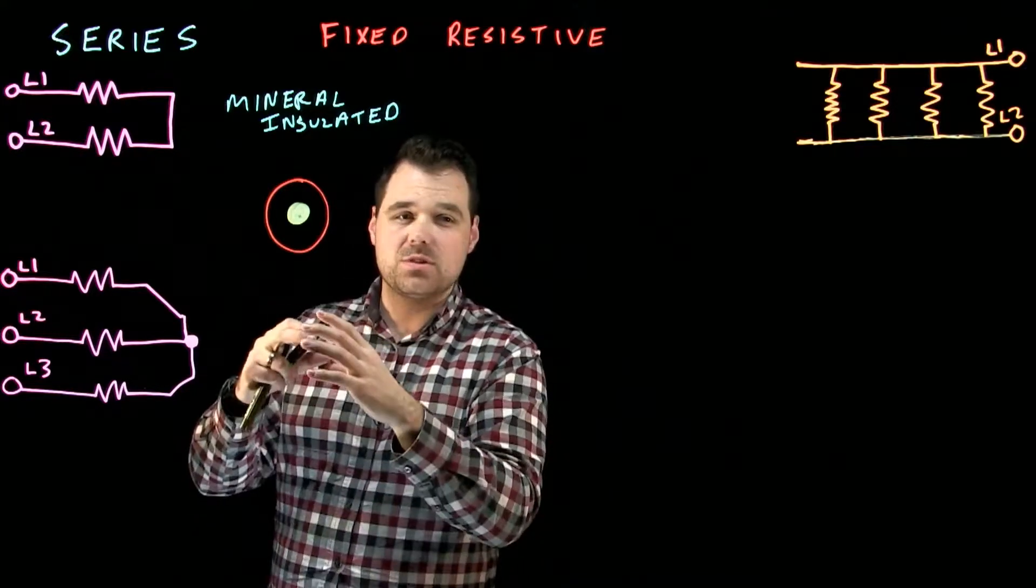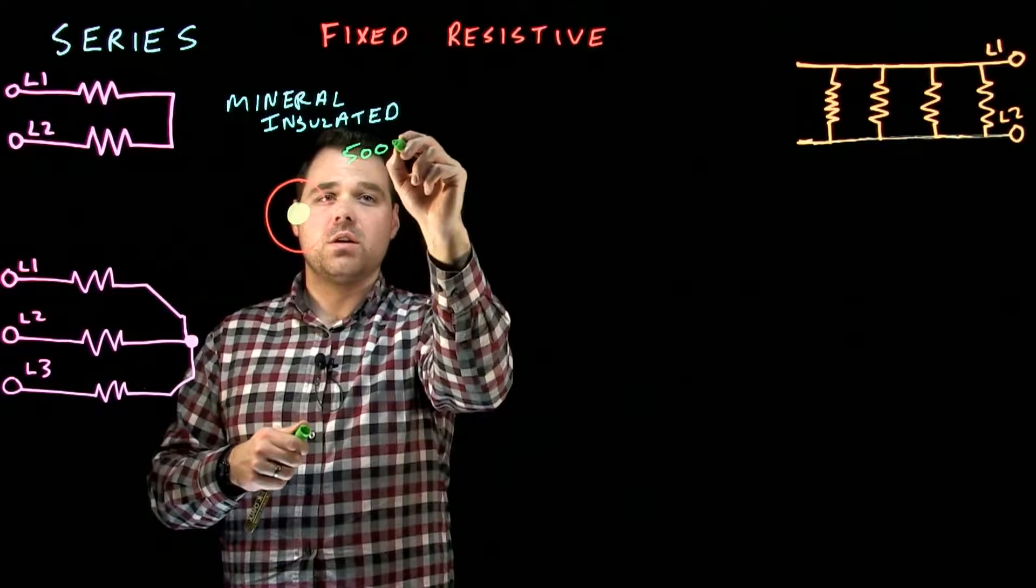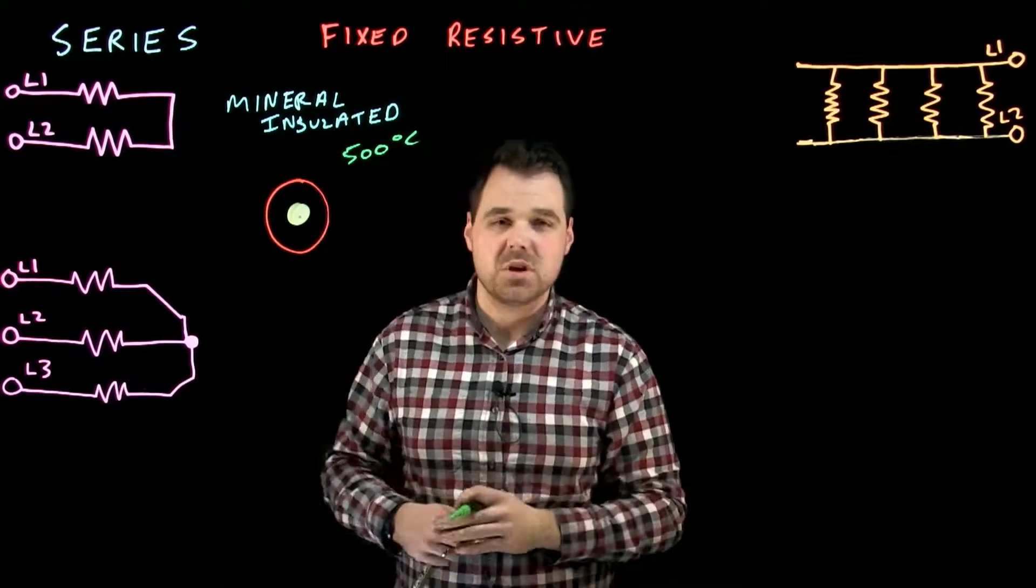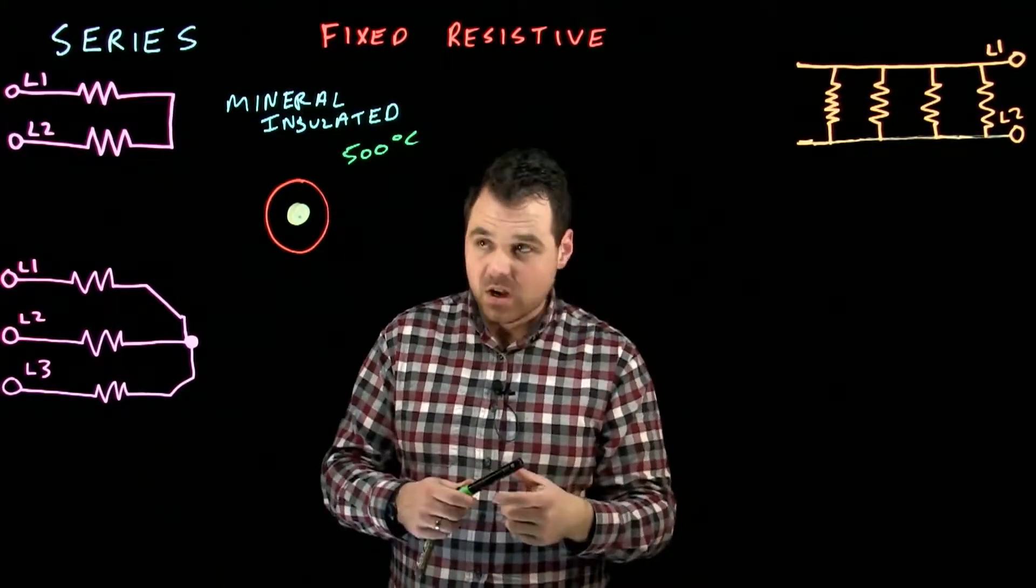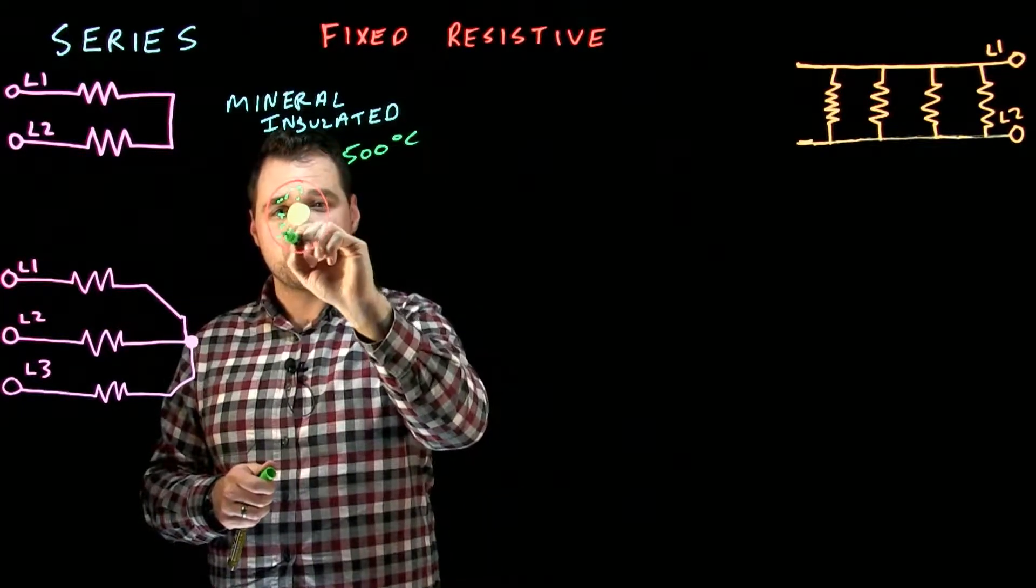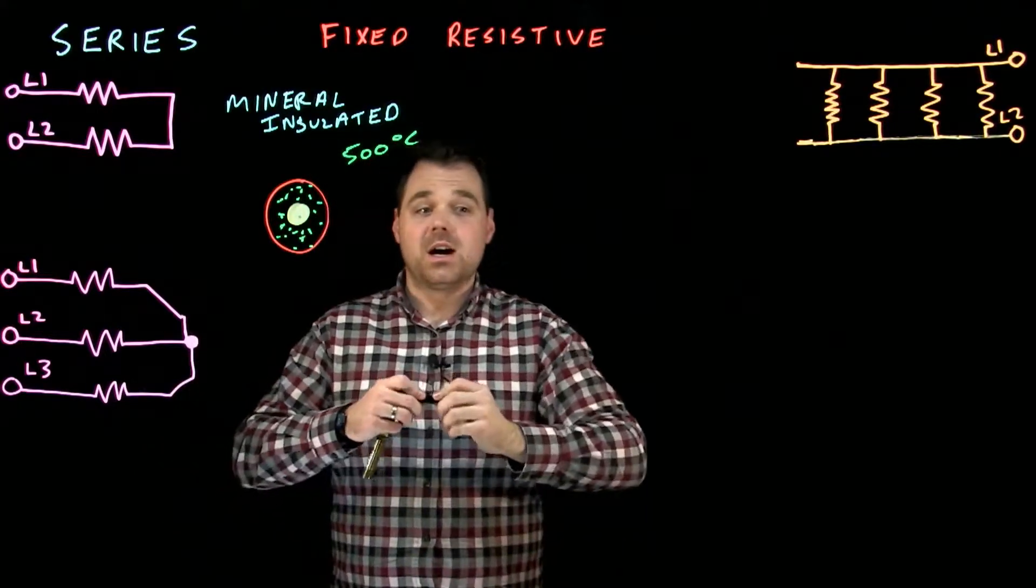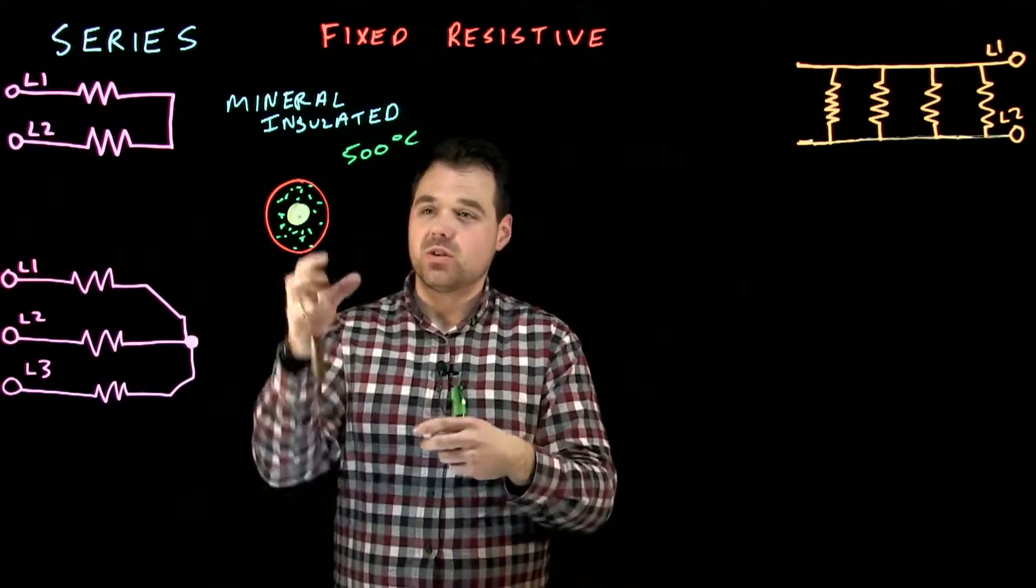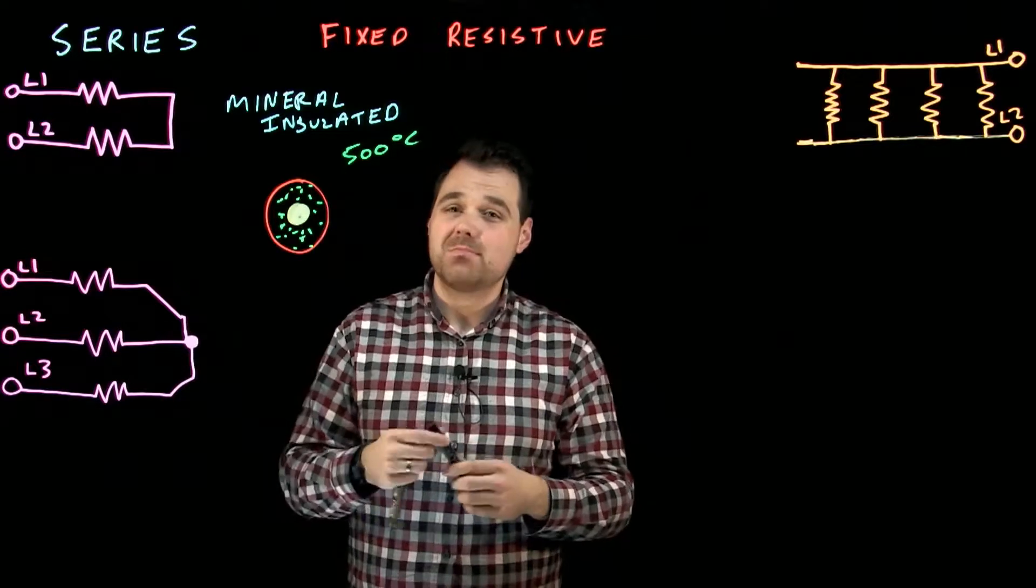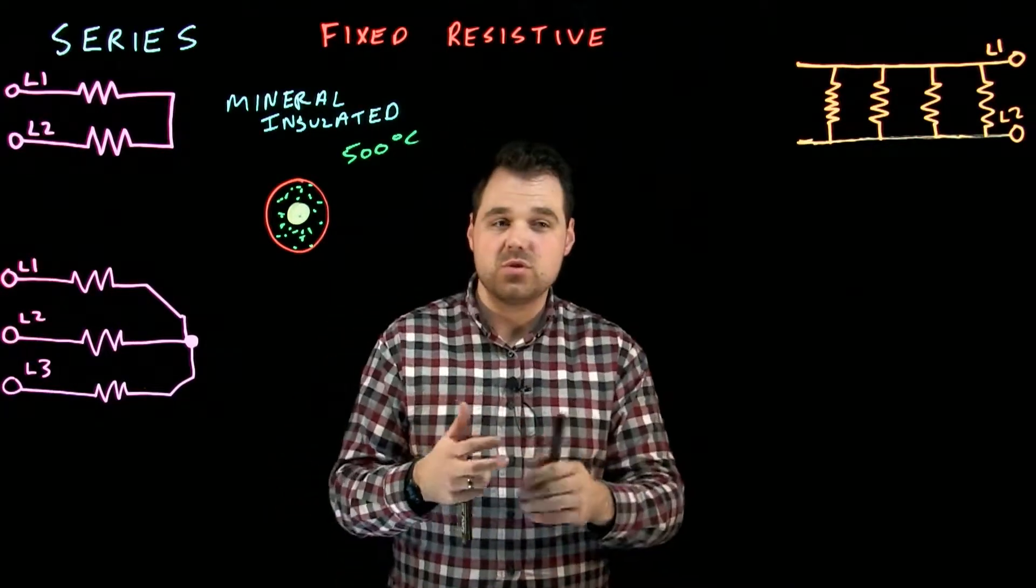We can't use plastic. We use the jacket. So it actually gets up to 500 degrees Celsius, some of this mineral insulated cable. Now filled within between that metal jacket and the actual conductor itself is some insulation. It's the mineral insulation that they're talking about. It's either magnesium oxide or silicon dioxide, which are the two very common ones.